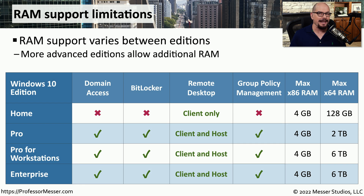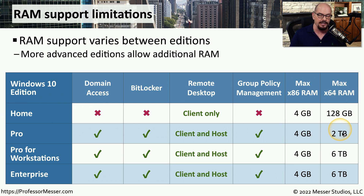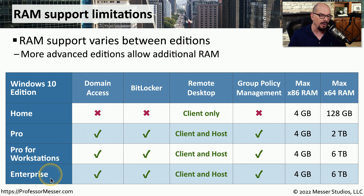There are also differences in how much memory a particular edition of Windows can support. Looking at the maximum amount of memory supported across editions: if you're running a 32-bit version of any Windows 10 edition, the maximum memory the OS can access is 4 gigabytes. To access additional memory, you'll need the 64-bit version. Windows 10 Home supports up to 128 gigabytes, Windows 10 Pro supports up to 2 terabytes, and Windows 10 Pro for Workstations and Enterprise can access up to 6 terabytes of memory.